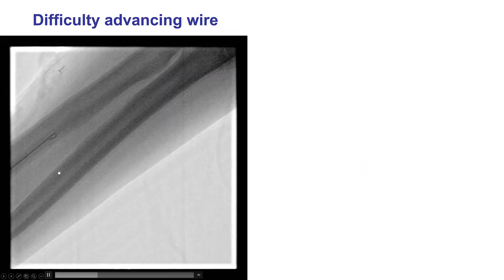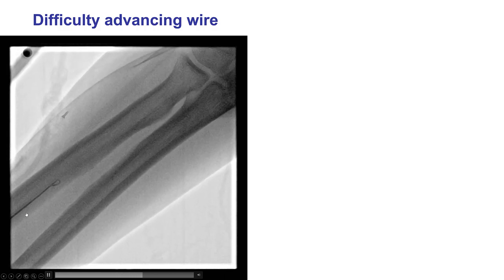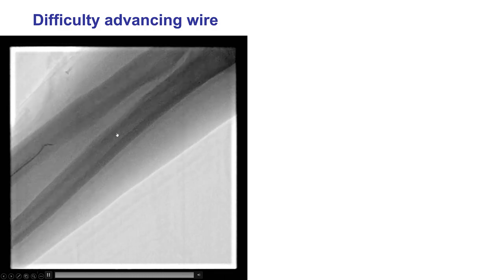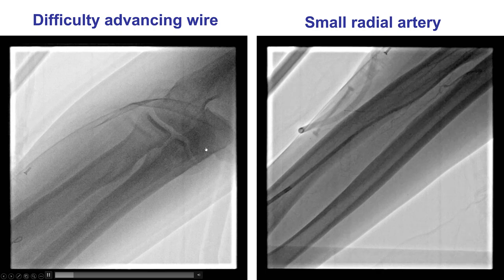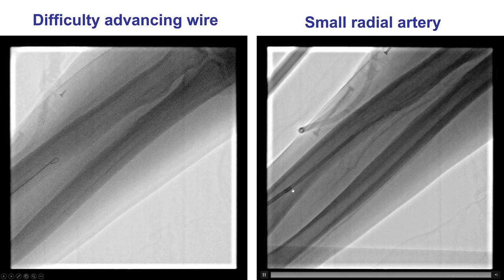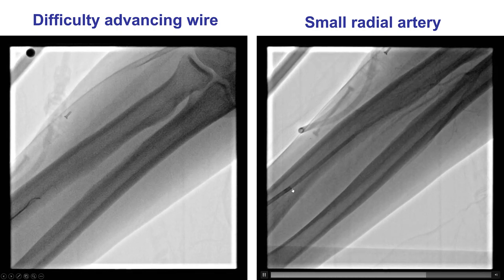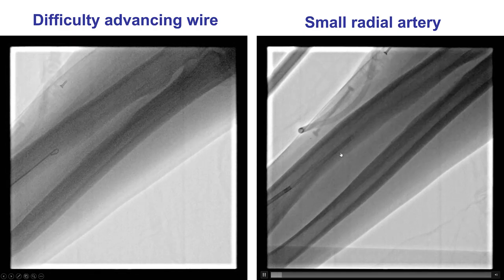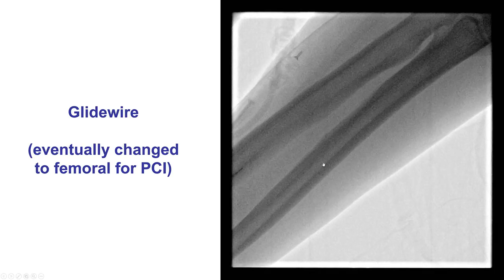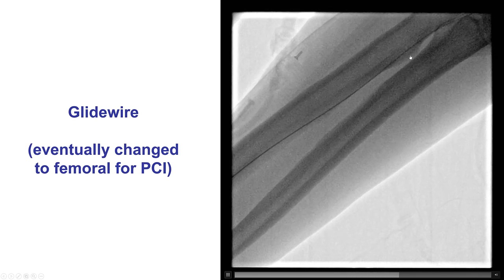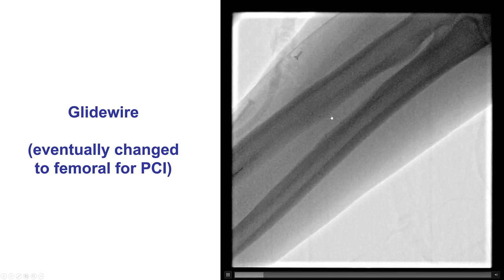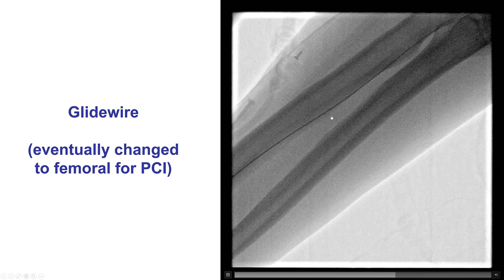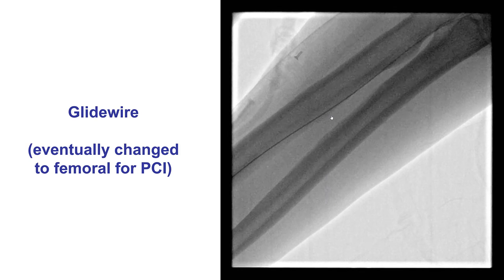This is an example of radial axis with difficulty advancing a guide wire through the radial artery. A catheter was advanced proximal to the point of resistance, and angiography was performed, revealing that the radial artery is of small caliber. A glide wire was easily advanced through the radial artery and the catheters were delivered. However, there was significant spasm of this small size radial artery, and as a result, change to femoral axis was eventually required.